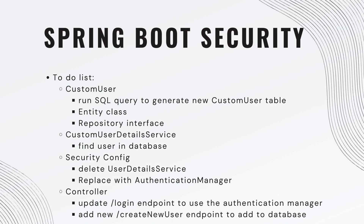Here is our to-do list. First we'll create a custom user — we won't call it 'user' because that already exists in Spring Boot. We need to run a SQL query to generate a new custom user table, create an entity class, and create a repository. Then we'll create a service class that is our custom user detail service, extending Spring Boot's UserDetailService to look up the user in our database. In our security configuration we'll delete the in-memory user detail service and replace it with an authentication manager. Finally, in our controller we'll update the login endpoint and add a create-new-user endpoint, since we can't inject a user directly via SQL because the password needs to be encoded through our application.